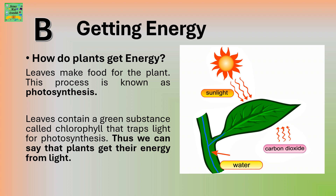Part B: Getting Energy. How do plants get energy? Leaves make food for the plants. This process is known as photosynthesis. Leaves contain a green substance called chlorophyll that traps light for photosynthesis. Thus, we can say that plants get their energy from light.